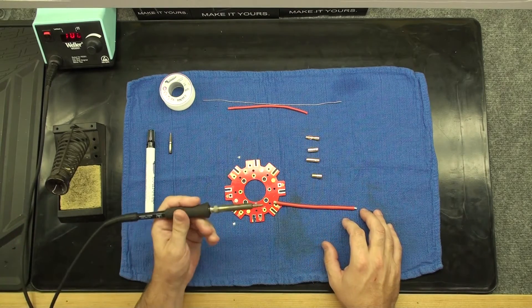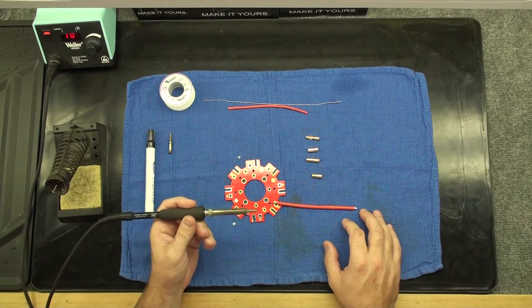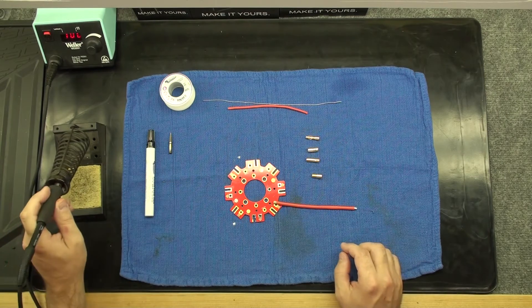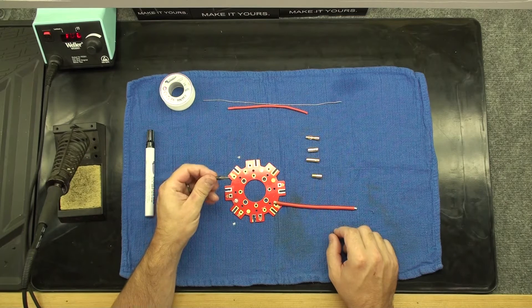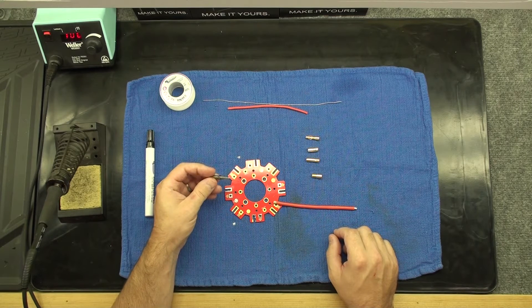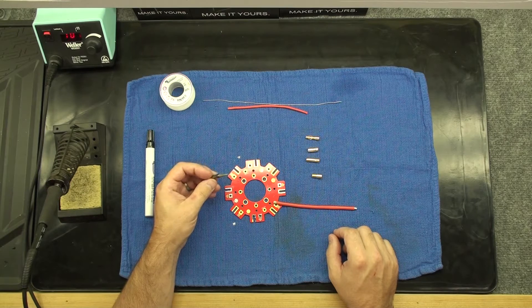We'll also be using a wide tip on the iron today to distribute the heat properly for the soldering we'll be doing. Choosing the correct tip is very important. If you choose too small of a tip, the iron cannot distribute the heat properly to the amount of materials being soldered. This can also lead to a cold solder joint.